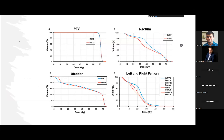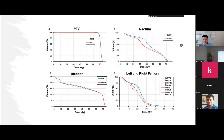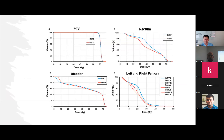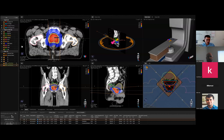The other benefit you'll see is on the dose volume histograms. Comparing IMRT versus VMAT, you won't get any improvement on target coverage — you can more or less hit the same metrics with both techniques. Where your big gains are is in critical structures. In this case, blue is IMRT and red is VMAT, and IMRT delivers a little more dose to the rectum and the left and right femoral heads.